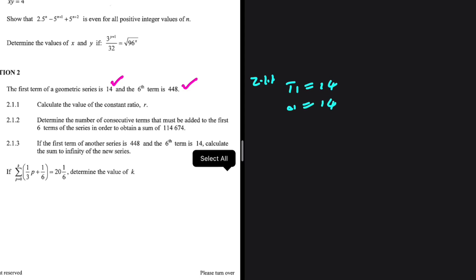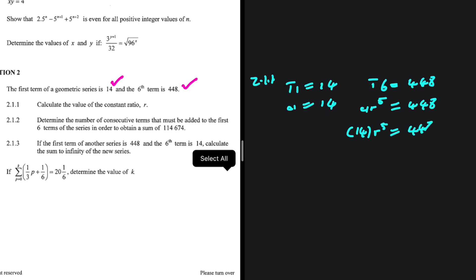On the other hand, T6 equals 448. T6 is A times R to the power of 5, which equals 448. We have the value of A — A is 14 — so we have 14 multiplied by R to the power of 5 being equal to 448.